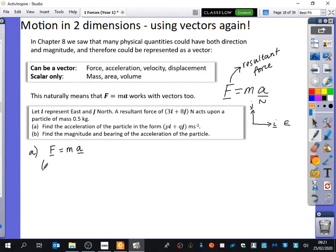So for part A, we know that F equals ma. So the resultant force is (3, 8). The mass is 0.5. And the acceleration is the thing that we don't know. So what could I do to both sides of the equation to find out what the acceleration is? I could just double it, right? This is saying half of the acceleration. So if I multiply this by 2, if I multiply this side by 2 as well,